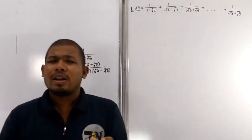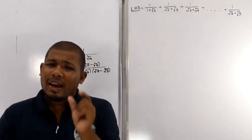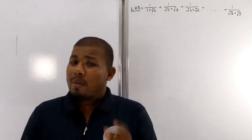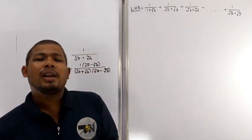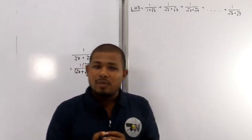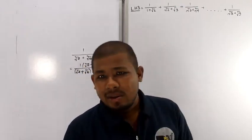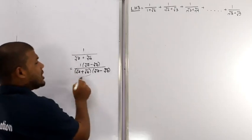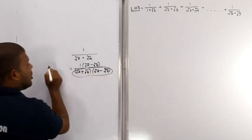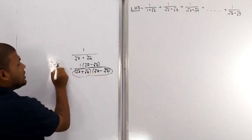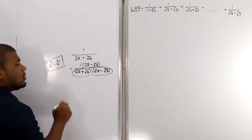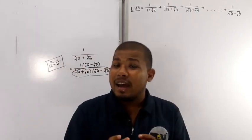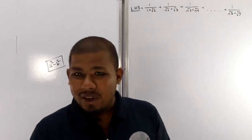This is equal to A minus B. Using the a squared minus b squared formula: a squared minus b squared equals a minus b, multiplied by a plus b. We will apply this formula here to rationalize the denominator.